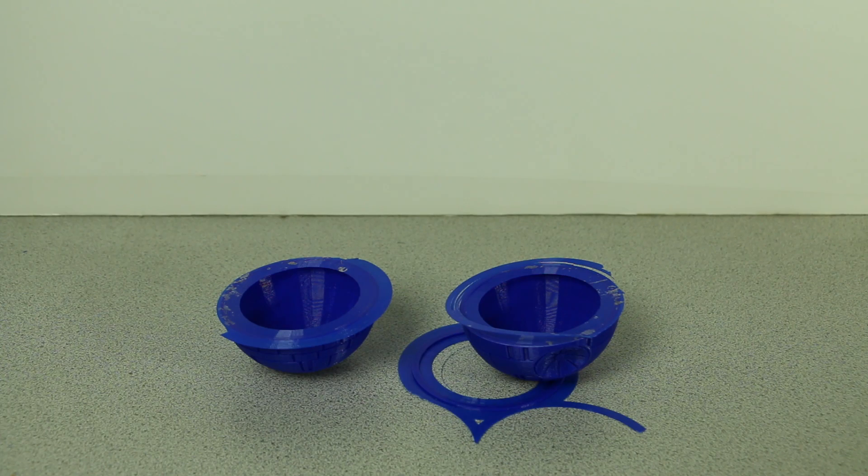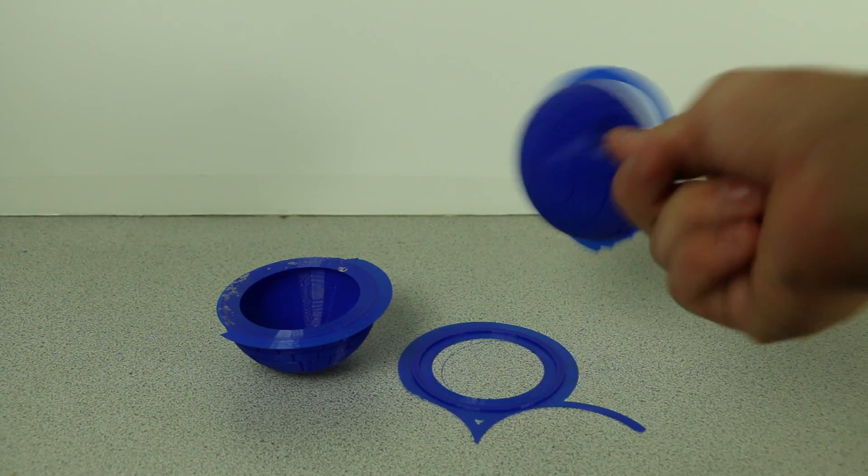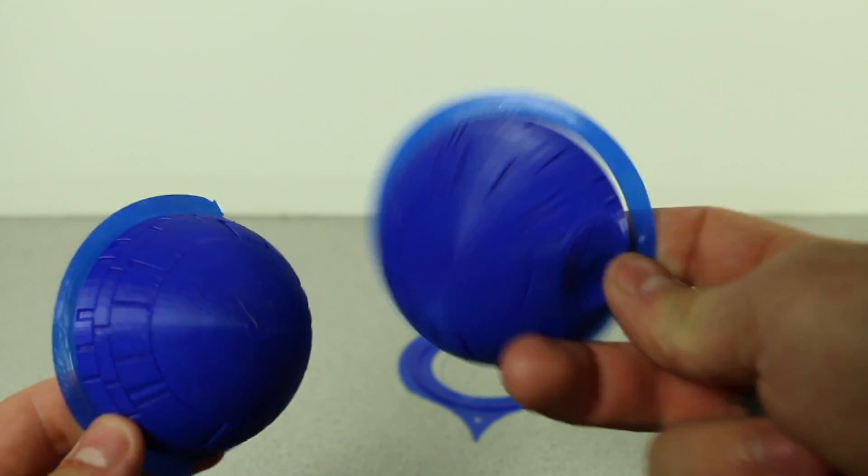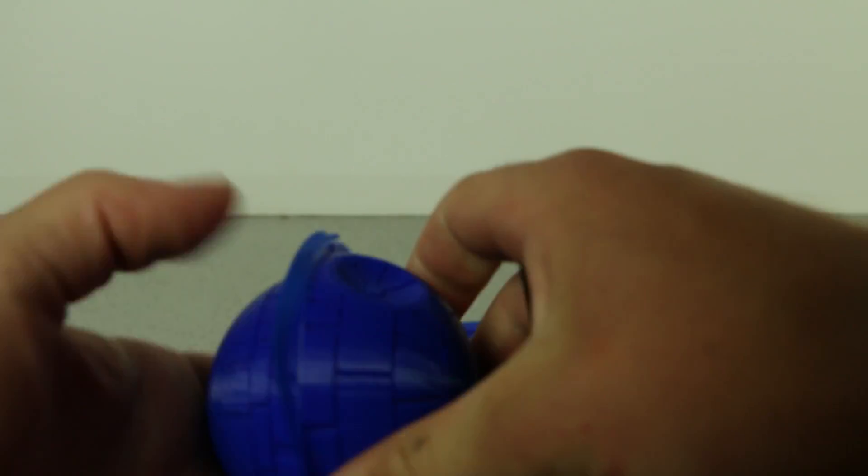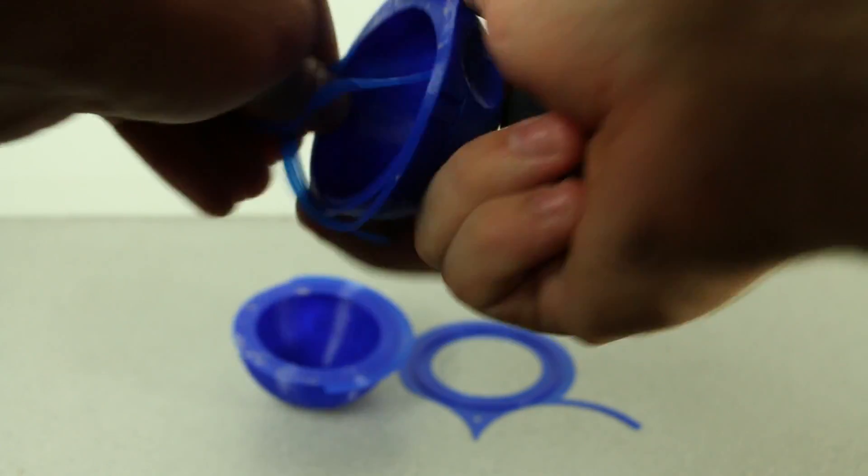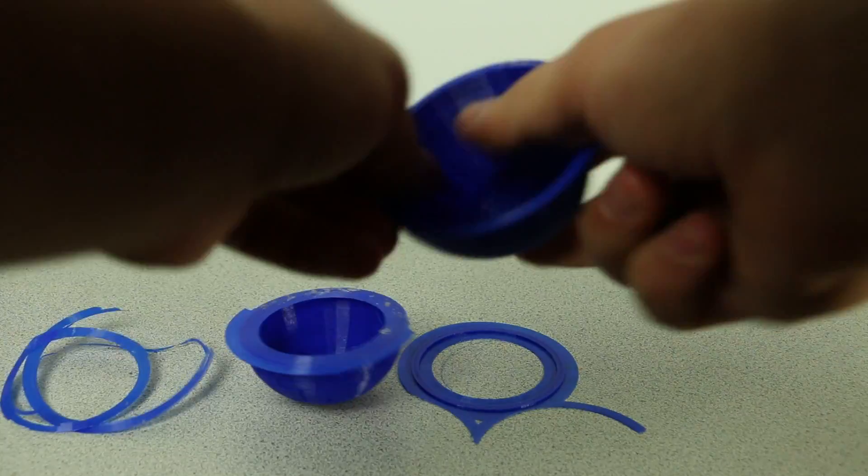Alright, so the parts have finished and they look absolutely awesome. They go together like this and create the Death Star. I'm going to have to clean them up by taking the brim off and some other stuff. Let's go ahead and do that now.